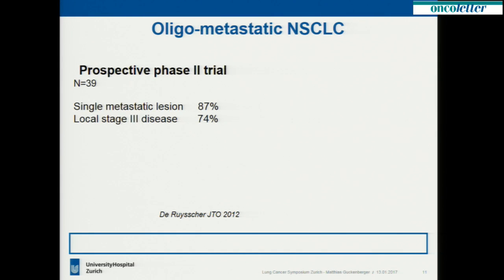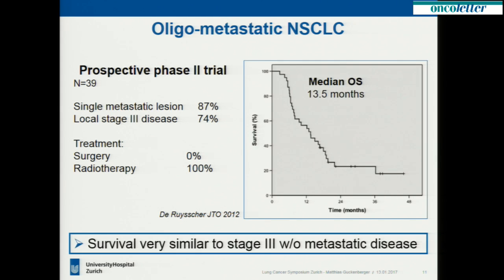I'm very happy to show data from Dirk Berusha, who published the first series on radical radiotherapy in oligometastatic synchronous stage 4 non-small cell lung cancer. It was a prospective phase 2 trial of 39 patients. The vast majority had a single metastatic lesion, and from a local perspective, stage 3 disease. Patients were treated exclusively with radiotherapy locally. The overall survival for this cohort had a median of 13.5 months — very similar to what we observe in locally advanced stage 3 disease, even without metastasis. Proper patient selection and an aggressive approach can be a viable option in oligometastatic patients.